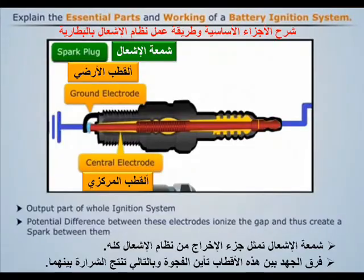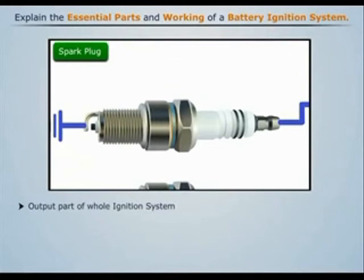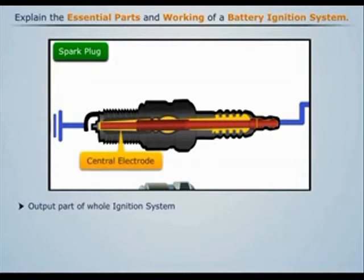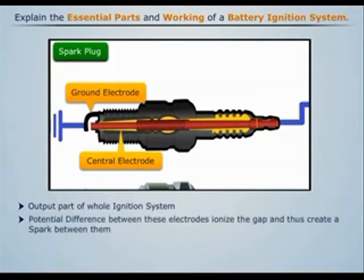The spark plug is the output part of the whole ignition system. It consists of two electrodes, one attached to the high-tension current-carrying wires and the other grounded. The potential difference created between these electrodes ionizes the gap present between them, and thus a spark is generated which ignites the combustible mixture.